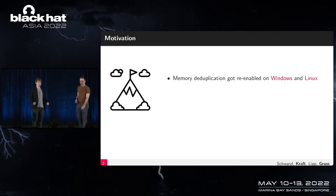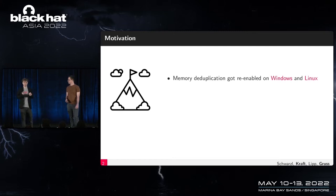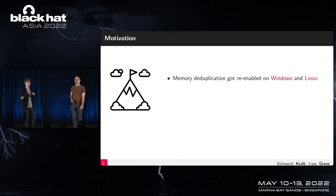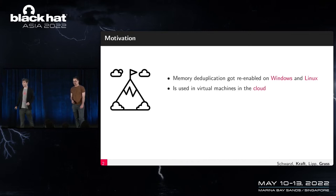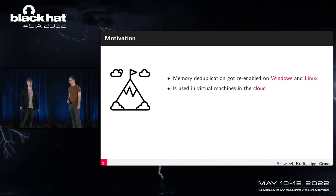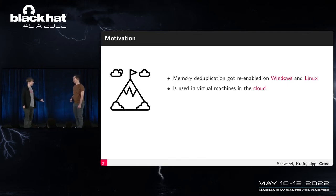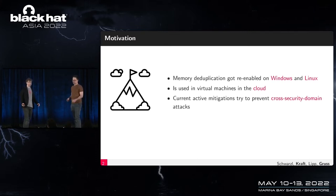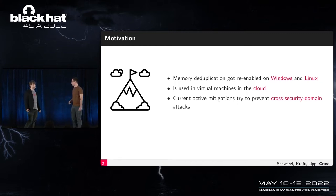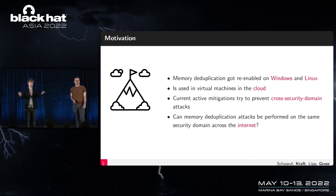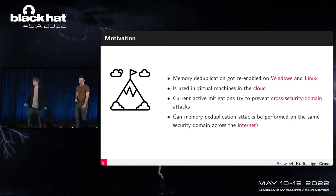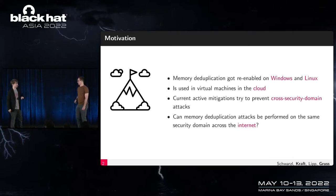Memory deduplication was disabled after the first wave of attacks — Linux disabled it, Windows disabled it — and later they re-enabled it with some security around it. It is still used in virtual machines today. The current mitigation prevents deduplication between security domains but not inside a security domain, so they don't consider a remote attacker in their threat model. Deduplication still works within the same security domain, and the question is: can we exploit that across the internet?